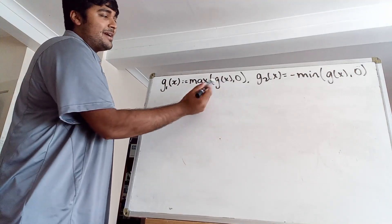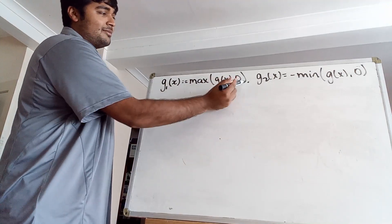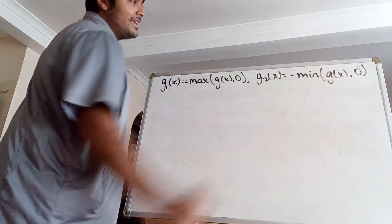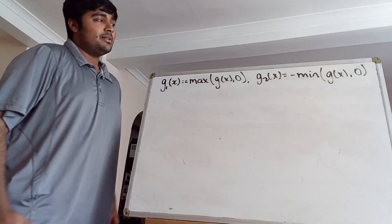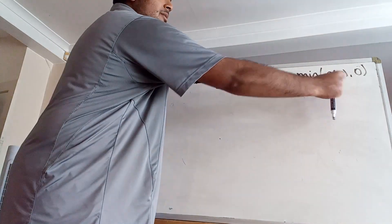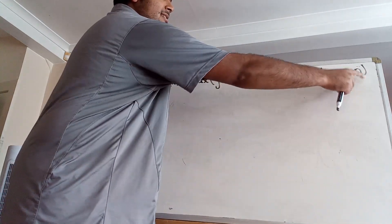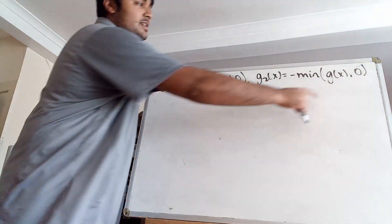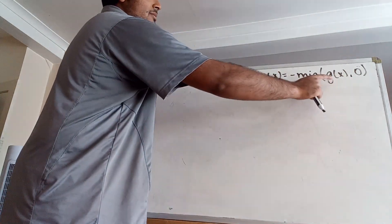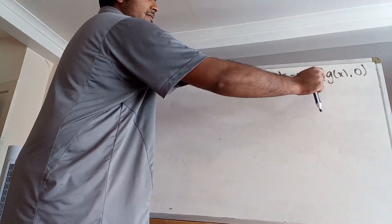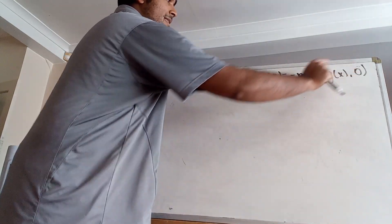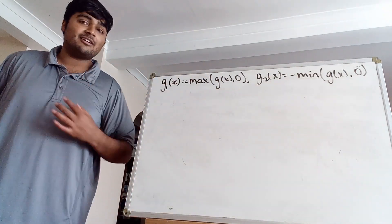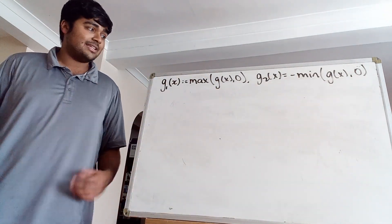g1 is going to be the maximum of two things, one of which is 0, so it's certainly at least 0. For g2, if g(x) is positive, then the minimum of g(x) and 0 is 0, so minus 0 is just 0. And if g(x) is negative, then the minimum is that negative number, but then we take the negative of it, so g2 is also non-negative. Both g1 and g2 are non-negative.